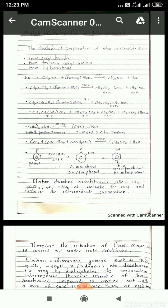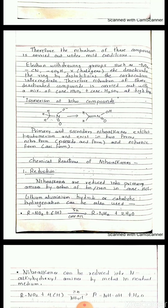Electron donating substituents like CH3, OCH3, OH, and NH2 activate the ring and stabilize the intermediate carbocation; therefore, the nitration of these compounds is carried out under mild conditions. Electron withdrawing groups such as NO2, CN, SO3H, and halogens deactivate the ring by destabilizing the carbocation intermediate, and therefore the nitration of these deactivated compounds is carried out with a mixture of concentrated nitric acid and concentrated sulfuric acid at high temperature.